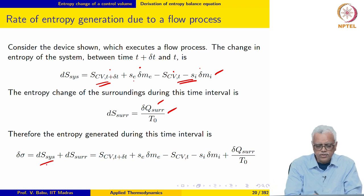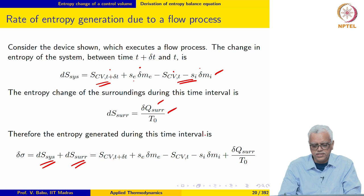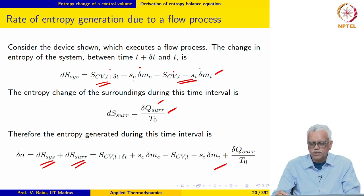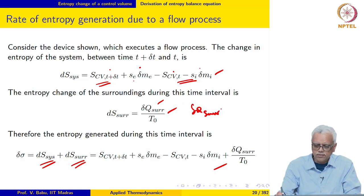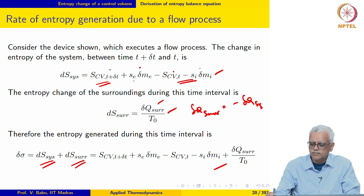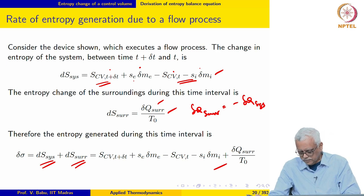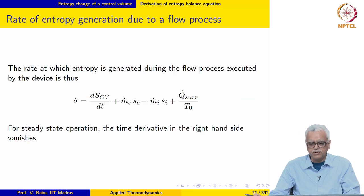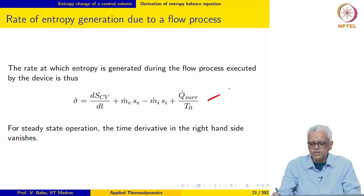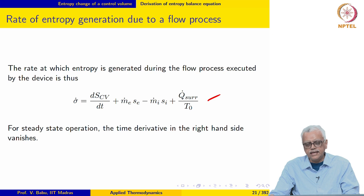The change in entropy of the universe during this time interval is dS_system + dS_surroundings, so δσ = dS_system + dS_surroundings. Note that δq_surroundings = −δq for the system. Rearranging and dividing by Δt, taking the limit as Δt → 0, we end up with an expression for the rate of entropy generation in the universe as a result of a flow process.